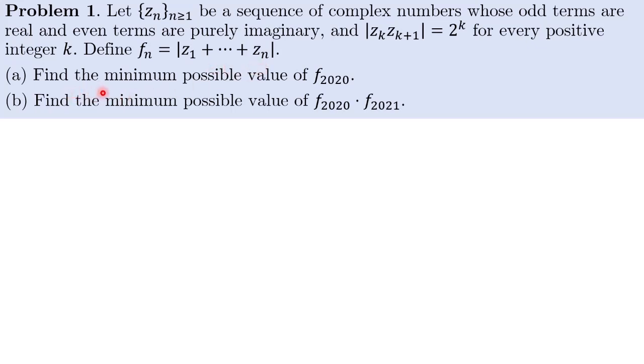So for part A, we need to find the minimum possible value of F2020. Now before going further to the question, I'm going to introduce some simplifying notation.